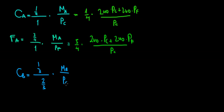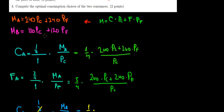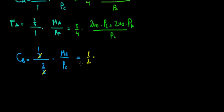So we have 1 over 3 divided by 2 over 3 — canceling the threes gives us 1 over 2 — times Benny's income, which is 120 times the price of clothing plus 120 times the price of food, divided by the price of clothing.